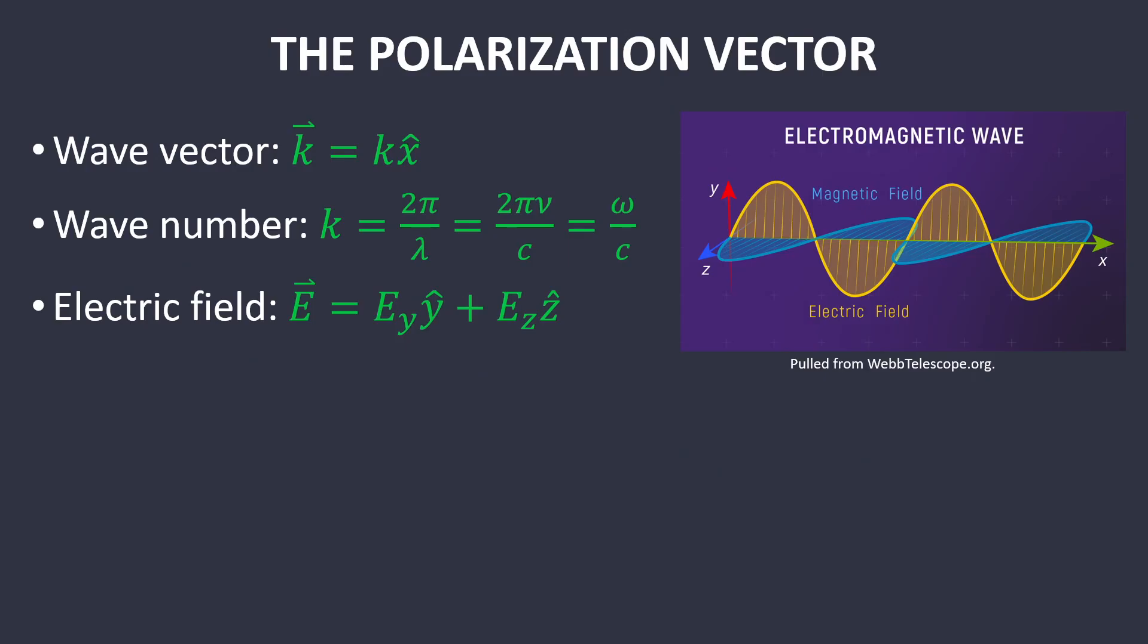First off, you have an electromagnetic wave propagating in the x-direction, with the magnetic field in the zx-plane and the electric field in the yx-plane. The wave vector is defined as k vector equals k in the x-hat direction, which is the direction of propagation, where the wave number is the ratio 2π over the wavelength, which can be reduced to angular frequency ω over the speed of light.